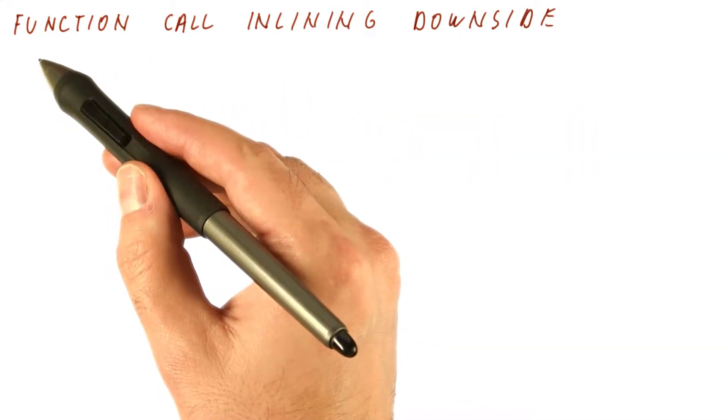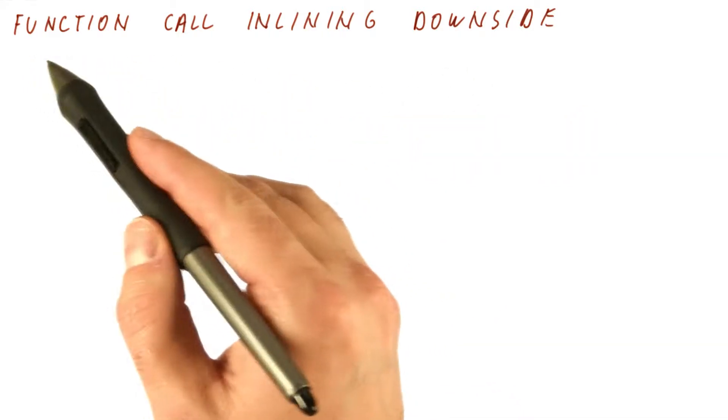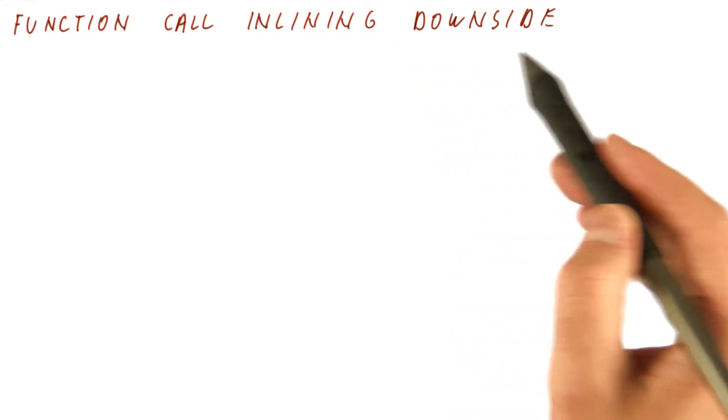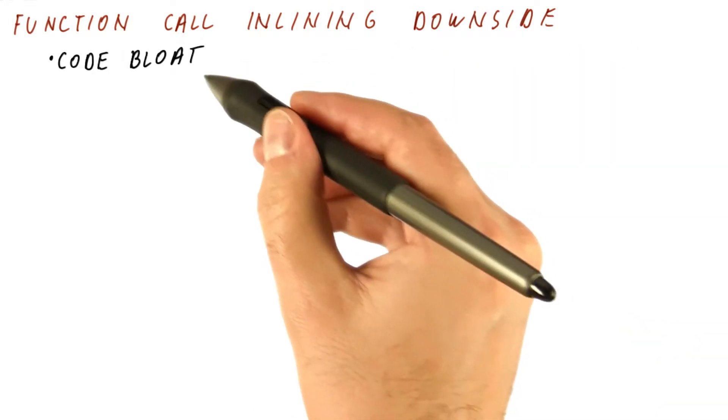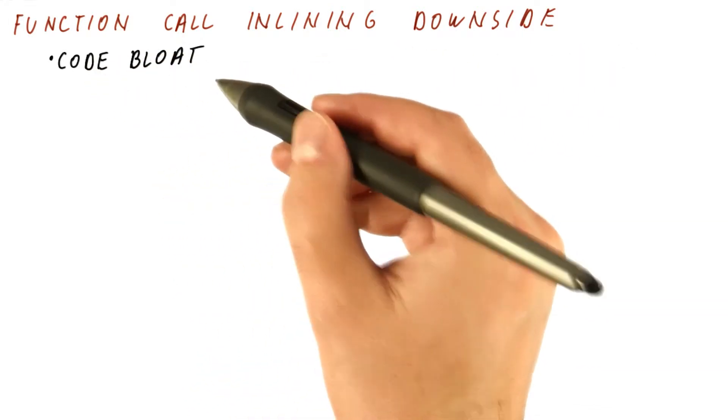Just like loop unrolling, which had similar benefits, function call inlining has a similar downside. And that downside is code bloat.